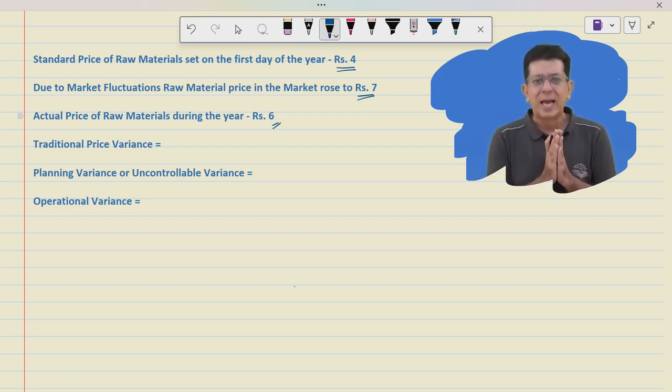Do you think that the purchase manager did a good job in purchasing the raw materials? His variance will be adverse or favorable? Let's try to explore this.